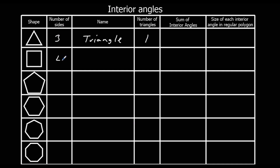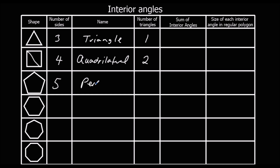Here I've got a four-sided shape — a quadrilateral. So if I go from this corner to this corner, I can make two triangles. I've got a five-sided shape — it's a pentagon. So if I start from one corner, I can make three triangles.